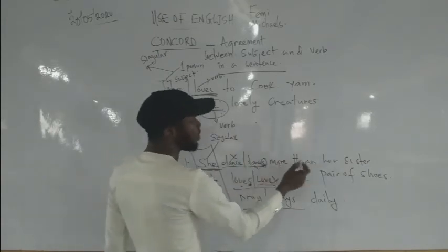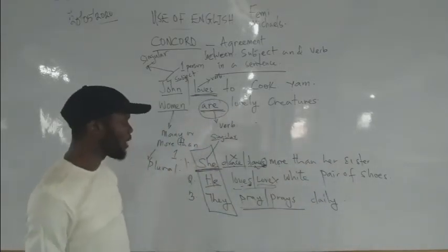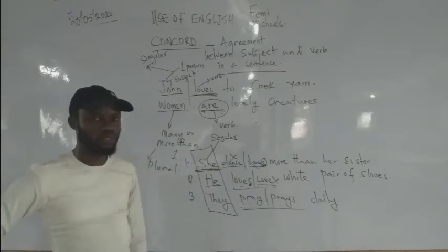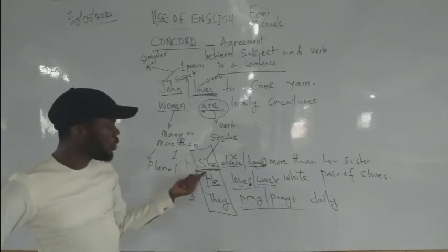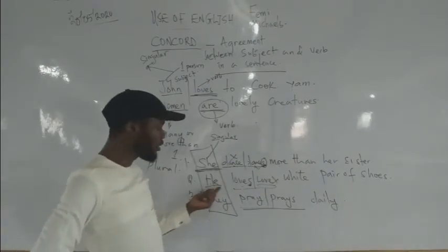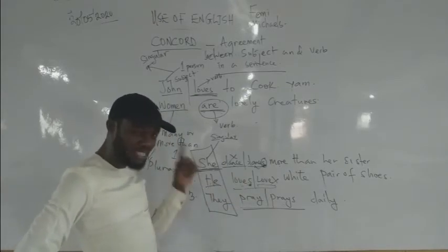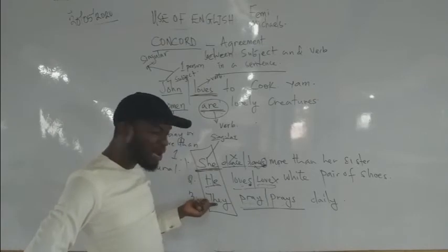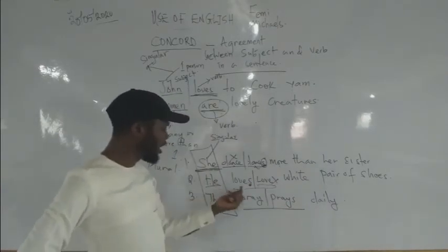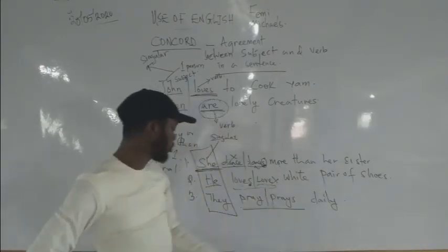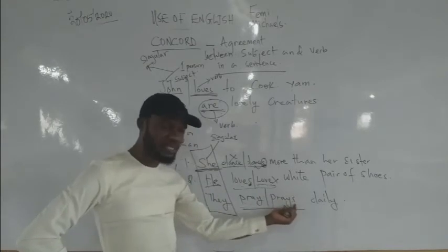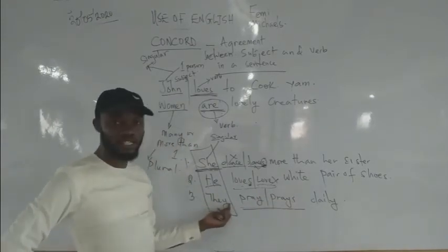So: 'She dances more than her sister' — that is the correct sentence. You don't say 'she dance.' 'He loves white shoes' — we use the one with S because he is singular. If the subject is more than one, we take the verb without S. So: she dances, he loves white shoes, they pray. 'They' is plural so we use 'pray', not 'prays'.